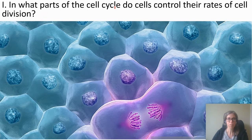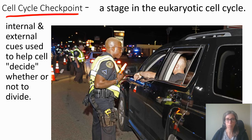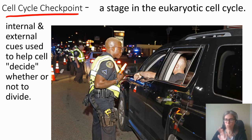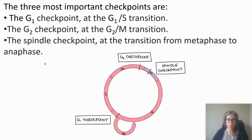In what parts of the cell cycle do cells control their rates of division? There are checkpoints. A cell cycle checkpoint is like a checkpoint you might see on the road — like on New Year's Eve where police officers check people in cars to see if they have a blood alcohol level high enough that they shouldn't be driving. So that's a checkpoint to say: you're okay to go, or no, you need to stop. Eukaryotic cells have these checkpoints, and they help the cell decide whether or not to divide. There are three important checkpoints to know.